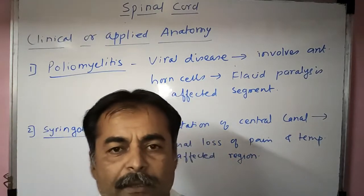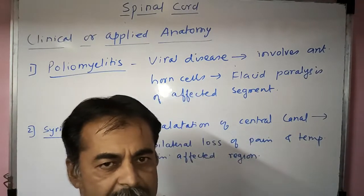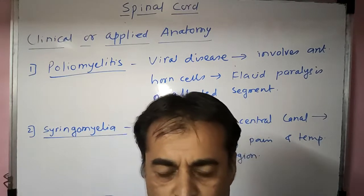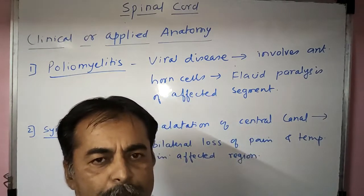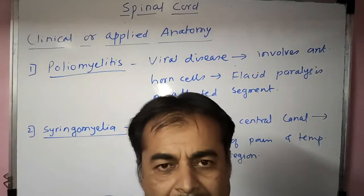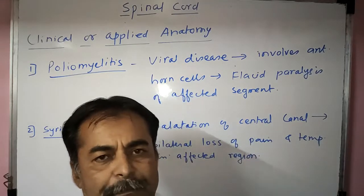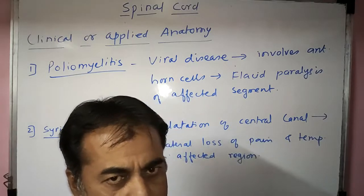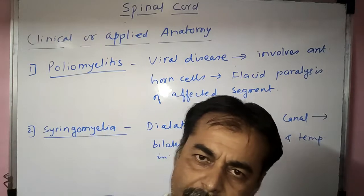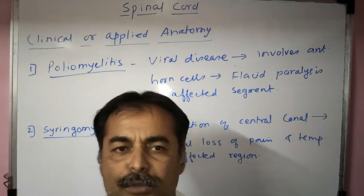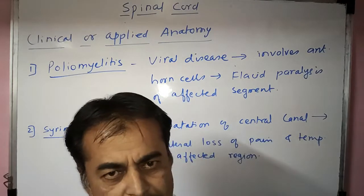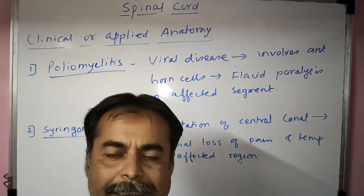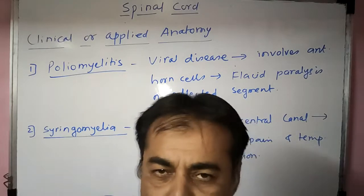The spinal cord gives attachment to 31 pairs of spinal nerves. Each spinal nerve arises from two roots: the anterior root (also called the ventral root) and the posterior root (also called the dorsal root).